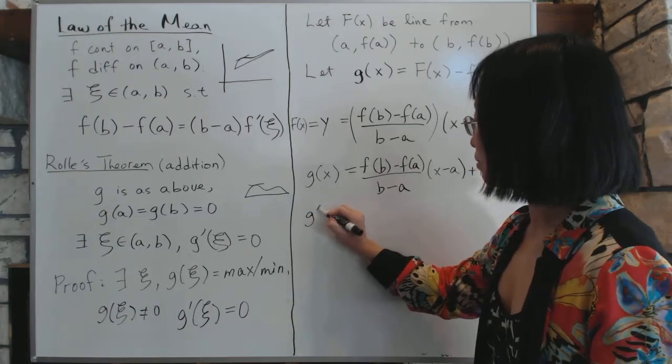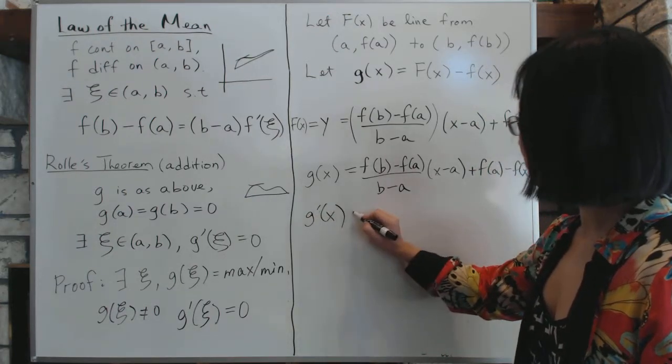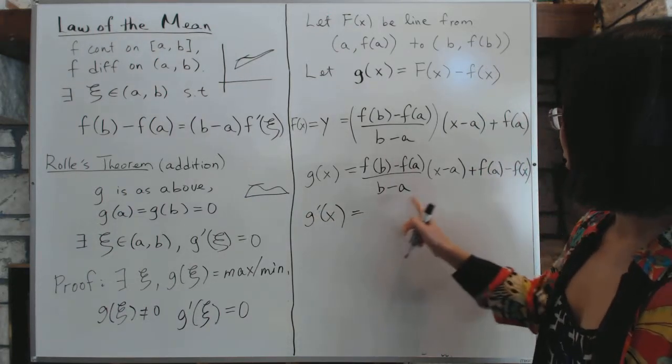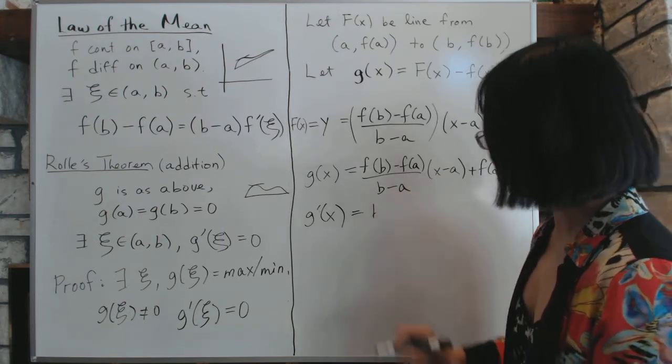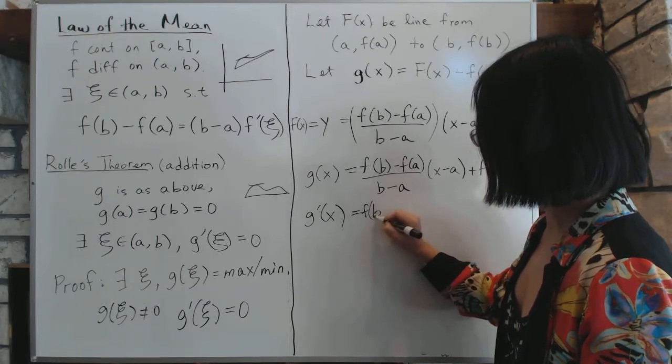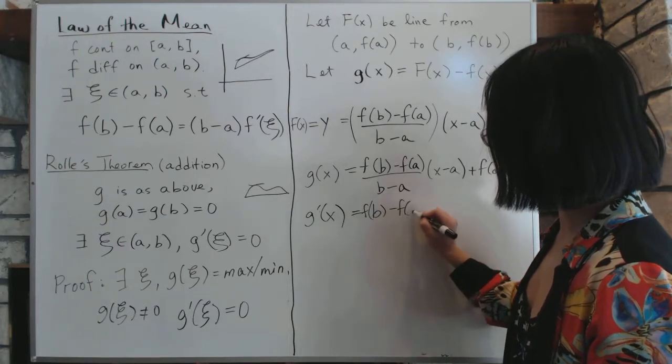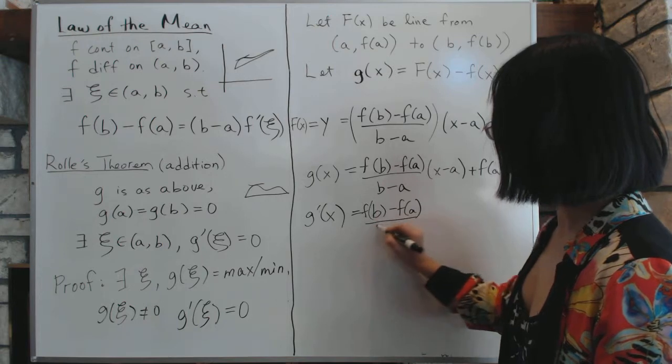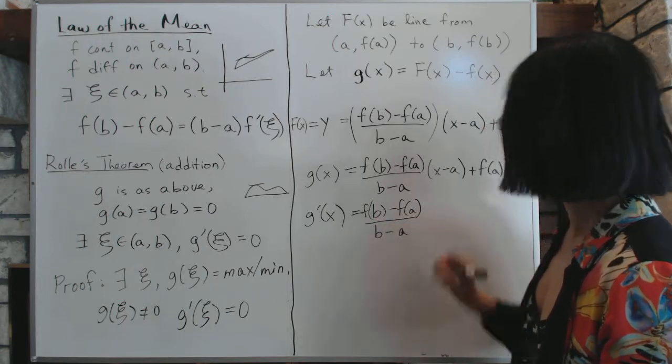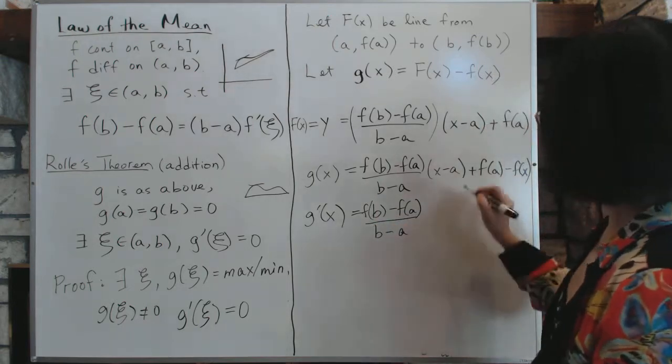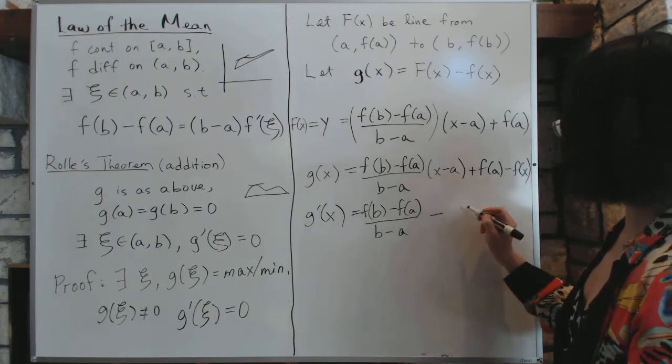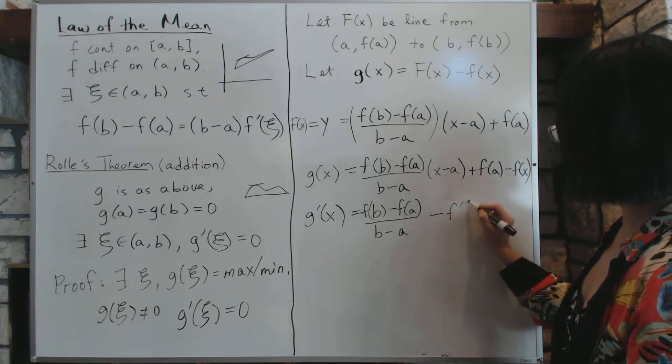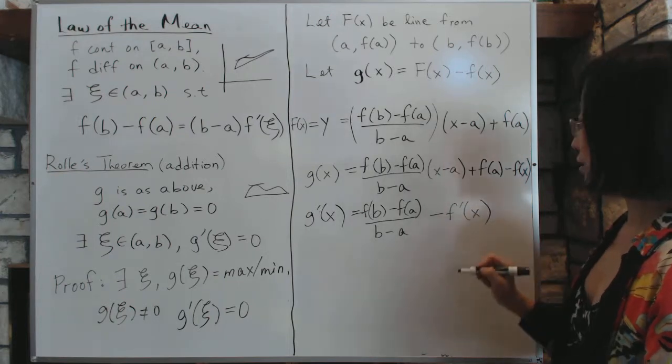Now, what is g'? g'(x) takes the derivative. So we have [f(b)-f(a)]/(b-a). And this is the constant. So that's gone. That's a constant. That's also gone, minus f'(x).